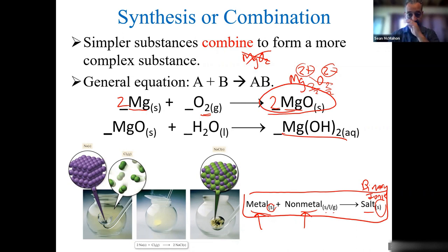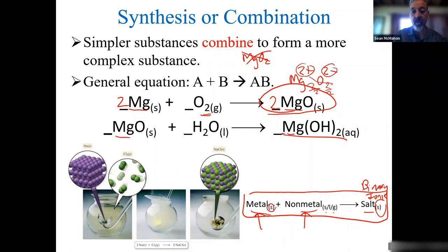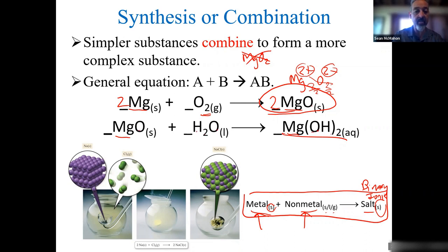It doesn't always have to be a metal and a non-metal — it could be a compound with another compound. For balancing this combination: one magnesium, one. I need two oxygen — I have one, two — and two hydrogen, two hydrogen. Balanced.